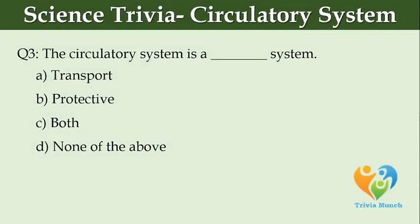The circulatory system is a blank system. Option A: transport system. Option B: protective system. Option C: both. Option D: none of the above.